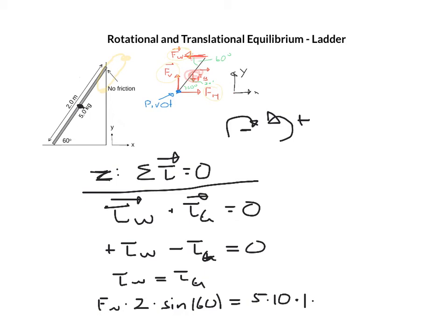So if I'm putting this here I have times sine of 30. Now I can solve this for my normal force, sorry my force from the wall which is a normal force, which should be equal to around 14.4 newtons.